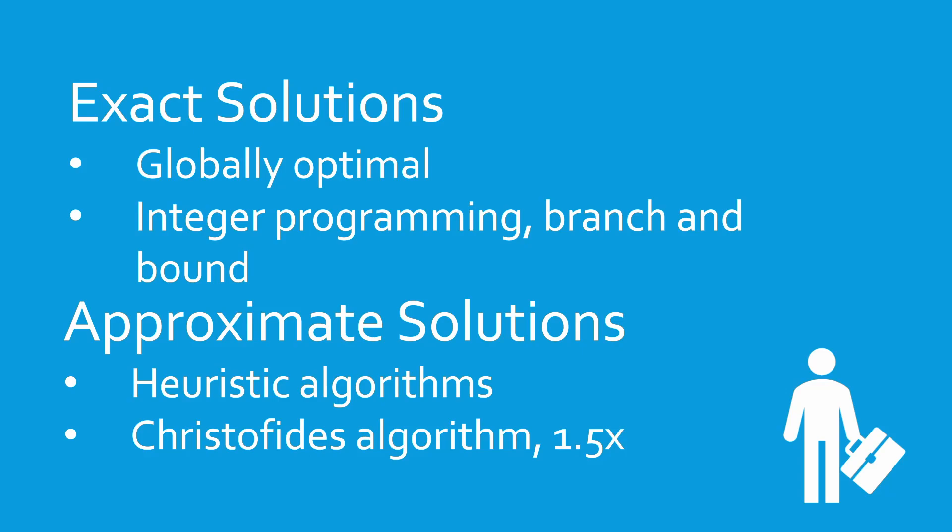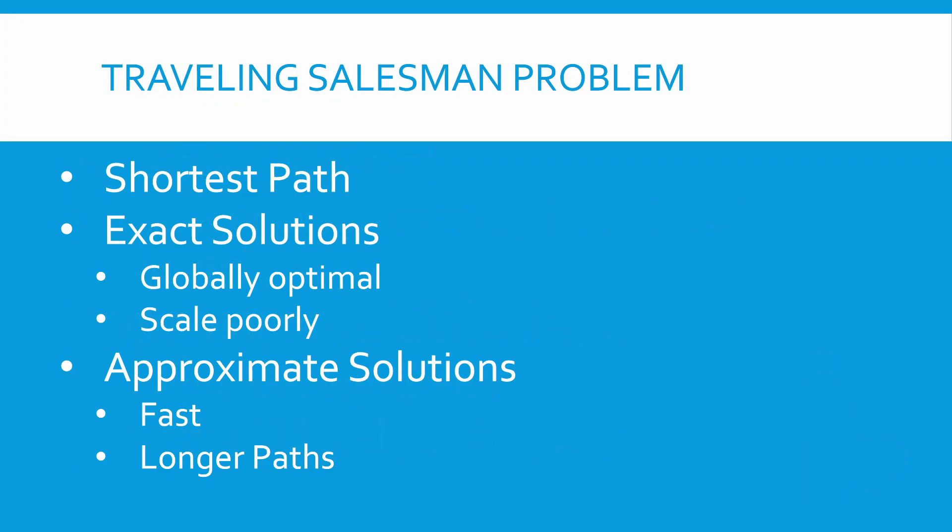A classic example of an approximate solution is the Christofides algorithm, which guarantees a solution no greater than 1.5 times the optimum path length. To summarize, today we covered a basic definition of the traveling salesman problem, which is essentially finding the shortest path to visit a set of locations. Solutions to the problem are either exact, which scale poorly, or approximations, which are fast but can return longer paths.